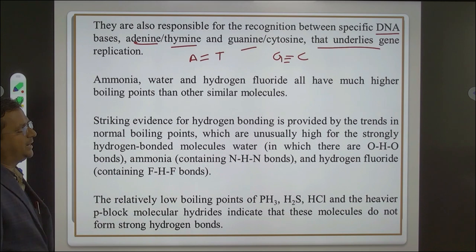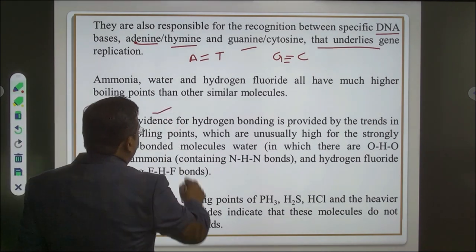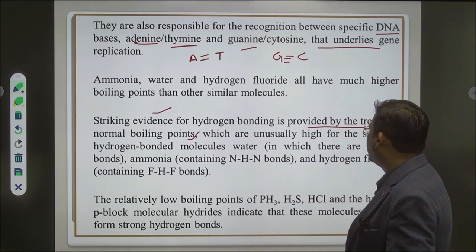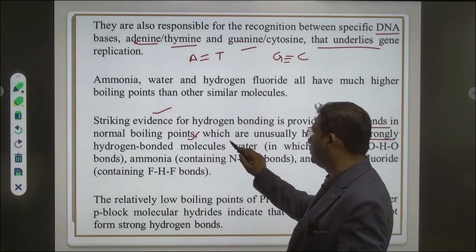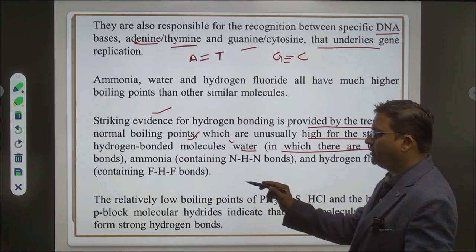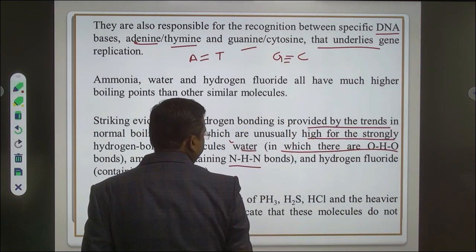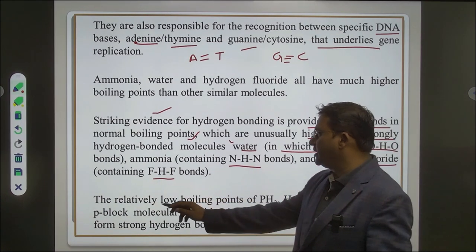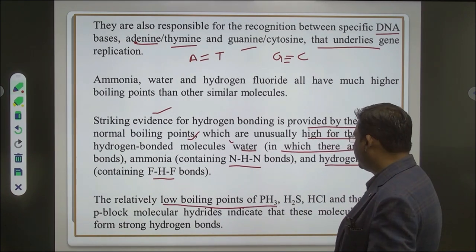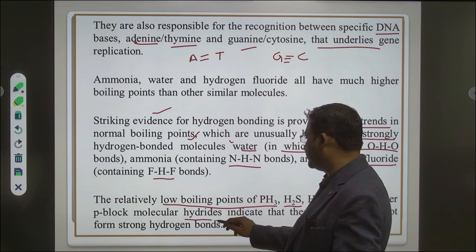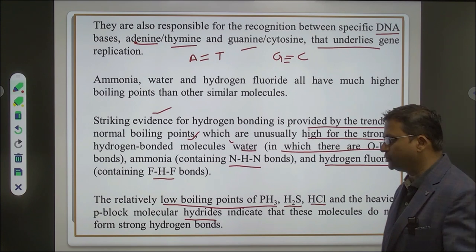Ammonia, water, and hydrogen fluoride all have much higher boiling points than other similar molecules, providing striking evidence for hydrogen bonding. The trend in normal boiling points is usually high for strongly hydrogen-bonded molecules like water (O–H···O bonds), ammonia (N–H···N bonds), and HF (F–H···F bonds). The relatively low boiling points of phosphine (PH3), H2S, HCl, and the heavier p-block hydrides indicate that these molecules do not form strong hydrogen bonds.